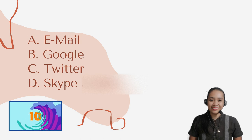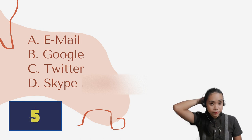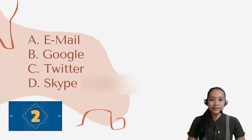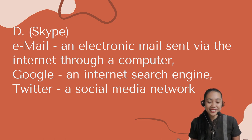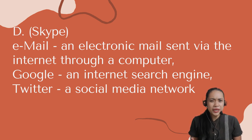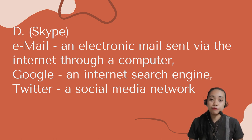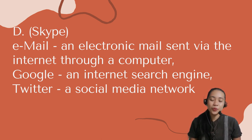The correct answer is letter D — Skype. Email is an electronic mail sent via the internet through a computer. Google is an internet search engine. And Twitter is a social media network.